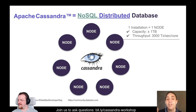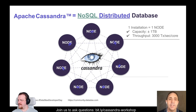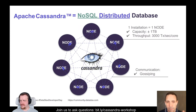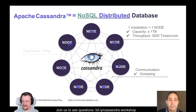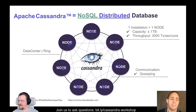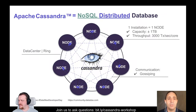If distributed, you will have multiple nodes. Each node communicates with each other using a protocol named gossiping. There is no master — it's not a master-slave architecture, it's masterless. We can group nodes in something called a data center or a ring. I will probably use 'data center' a lot during this presentation, but be aware it can also be called a ring.